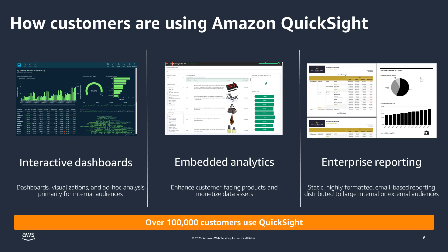Recently at re:Invent, we launched paginated reporting, which means you no longer have to maintain separate systems for your paginated, pixel-perfect reports. You can export them in PDF formats and highly formatted CSVs, and at the same time you can enable subscriptions on your reports which can be delivered to your end users' inboxes.